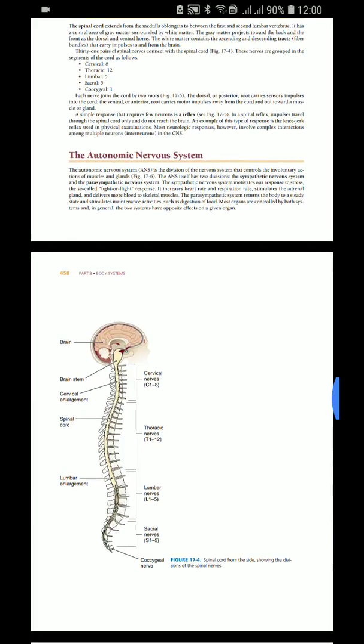31 pairs of spinal nerves connect with the spinal cord. These nerves are grouped in segments: cervical 8, thoracic 12, lumbar 5, sacral 5, and coccygeal 1.